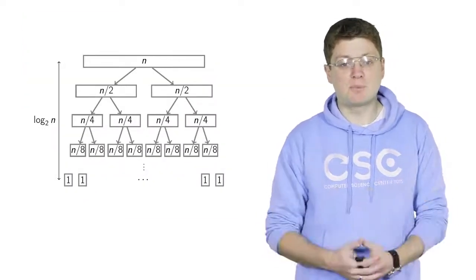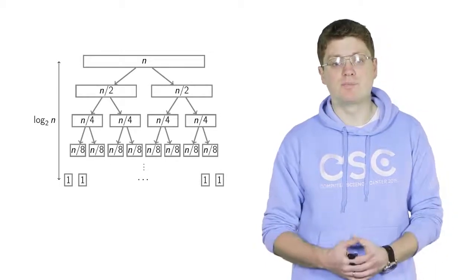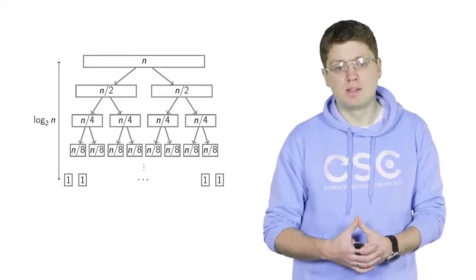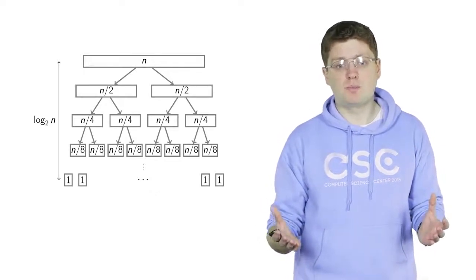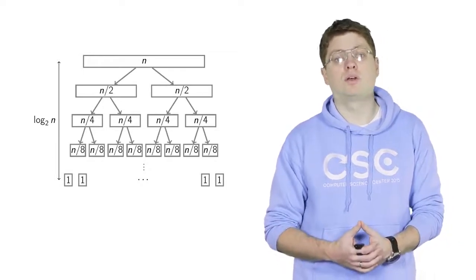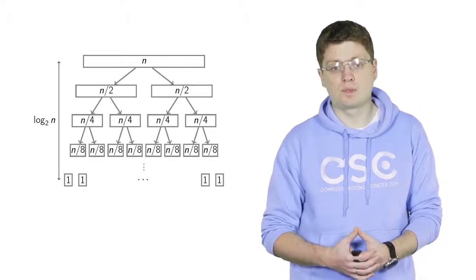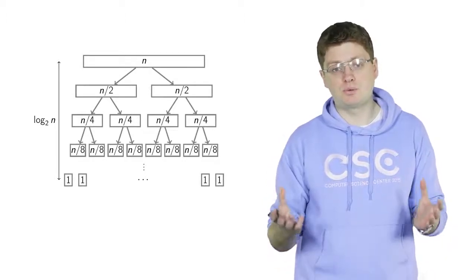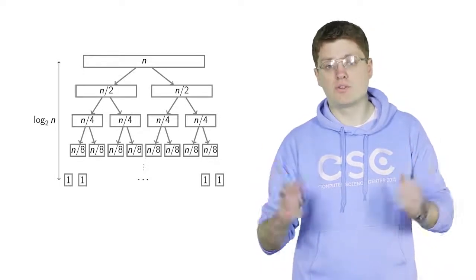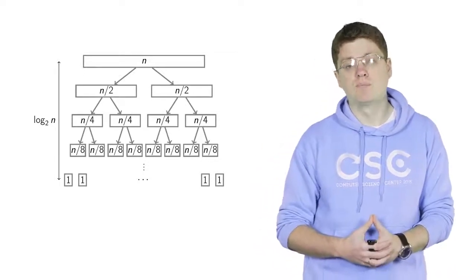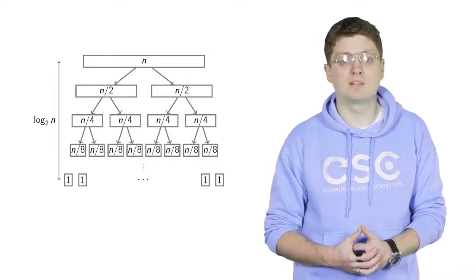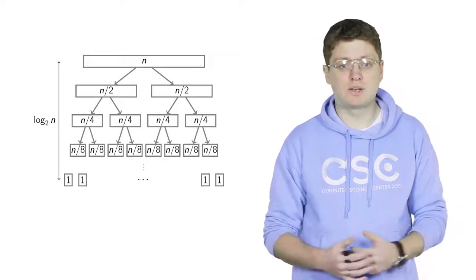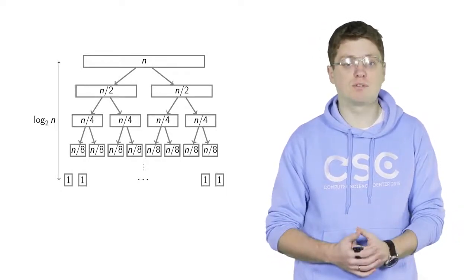To estimate the running time, consider the recursion tree. At the top we have one array of size N. It makes two recursive calls for arrays of size N/2. Each of those is split into two arrays of size N/4, giving four arrays of size N/4, and so on. This tree has log N levels. We will estimate the work done at each level separately.